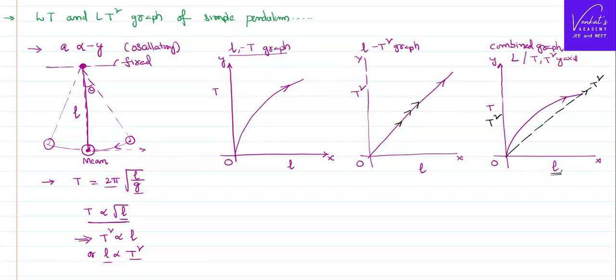This is the T² graph. What you could have noticed is that at one point, these two graphs are intercepting each other at a particular length. At this point, for both T as well as T², L is same.